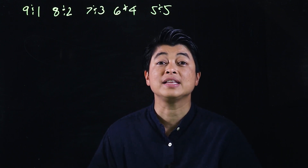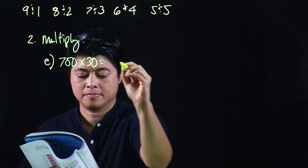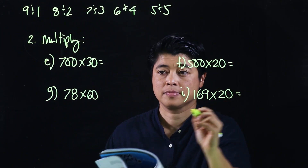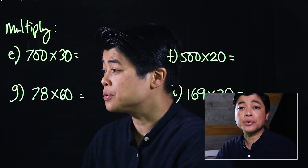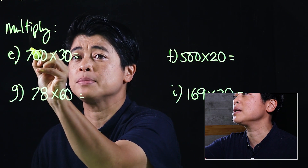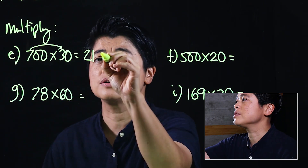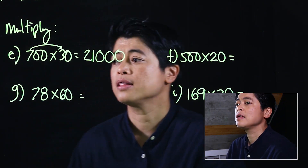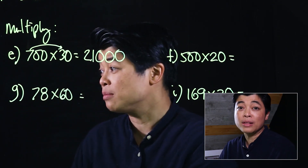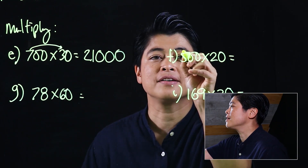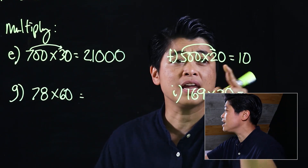These are on page 58. Starting with example E — clearly these have zeros. The first thing we do is multiply seven times three, which is 21, then count the zeros: there are three zeros, so we follow with three zeros. That can be written horizontally because we can do it mentally. Similarly, five times two is ten, followed by three more zeros — that can also be done mentally.